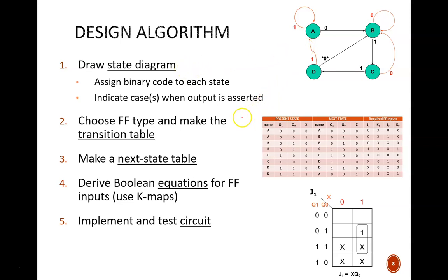The second step is to choose a flip-flop type, D, T, or JK, and make the corresponding transition table. The third step is to make a next state table. This is usually the most time-consuming portion of a design, as you will fill in many rows and columns of ones and zeros. And try not to let your eyes go blurry.